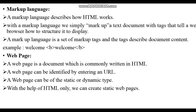Now let's see what is a markup language. A markup language describes how HTML works. With a markup language, we simply mark up a text document with tags that tell a web browser how to structure it and display it. A markup language is a set of markup tags, and the tags describe document content. For example, if I want to make the word 'Welcome' bold, I am going to use the tag 'b', which will indicate that 'Welcome' will be displayed in bold on your web page.